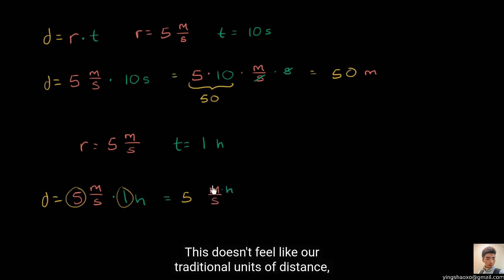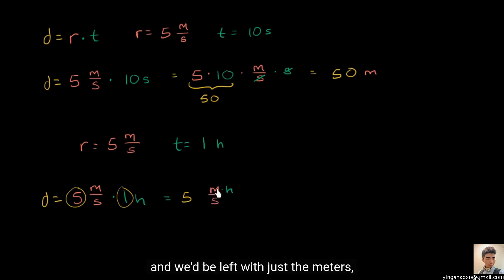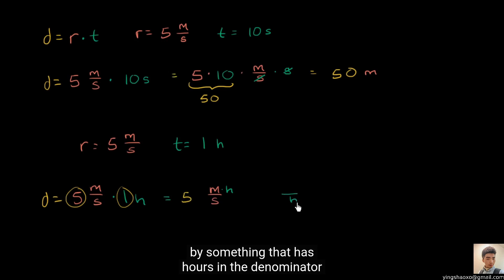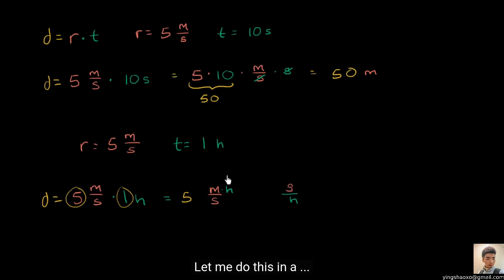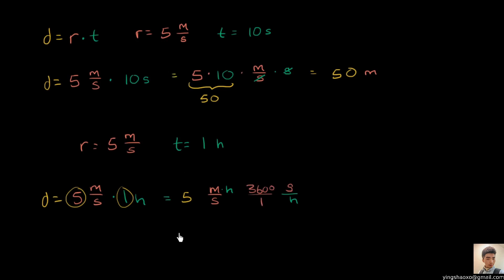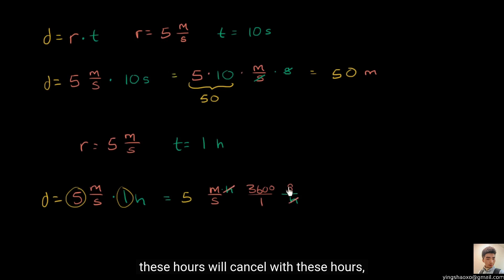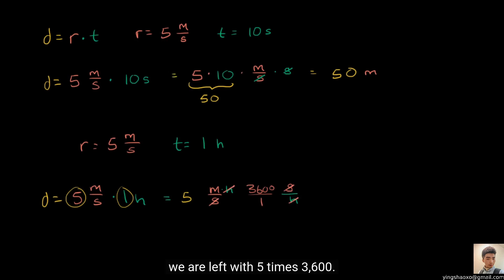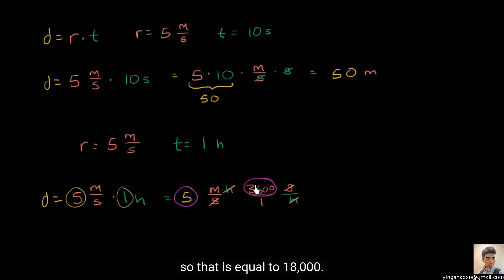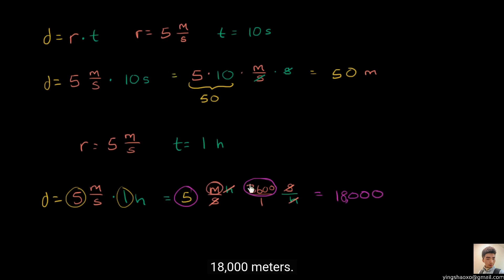So we want to cancel this out in some way. Well, if we can express hours in terms of seconds, then that would cancel here and we'd be left with just the meters, which is a unit of distance we're familiar with. So how do we do that? By multiplying by something that has hours in the denominator and seconds in the numerator — essentially seconds per hour. How many seconds are there per hour? There are 3,600 seconds per hour. Or you could say there are 3,600 seconds for every one hour. Now when you multiply, these hours cancel with those hours, and these seconds cancel with those seconds. And we are left with five times 3,600. Five times 3,000 would be 15,000; five times 600 is another 3,000. So that is equal to 18,000. And the only units we're left with are meters: 18,000 meters.